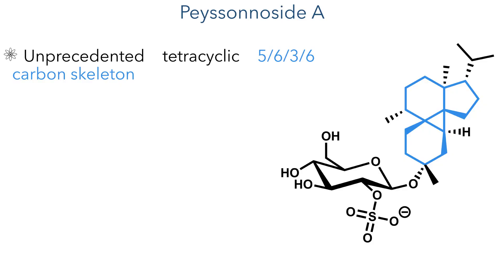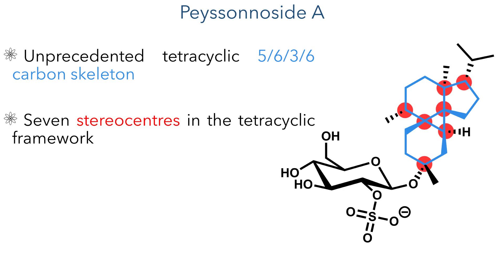The structure of the compound is very interesting, as it has an unprecedented tetracyclic 5-6-3-6 carbon skeleton with seven stereocenters included in this tetracyclic framework, in addition to those found on the sugar moiety which is attached via a beta-glycosidic linkage.